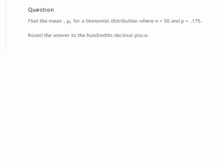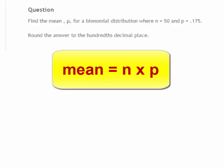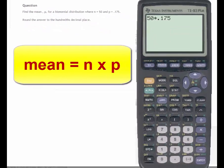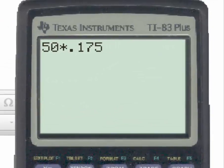What you need to know is that the mean for a binomial probability distribution is given by the formula n times p. Using the TI-83, we simply input n times p and hit enter, and we have our answer: 8.75.